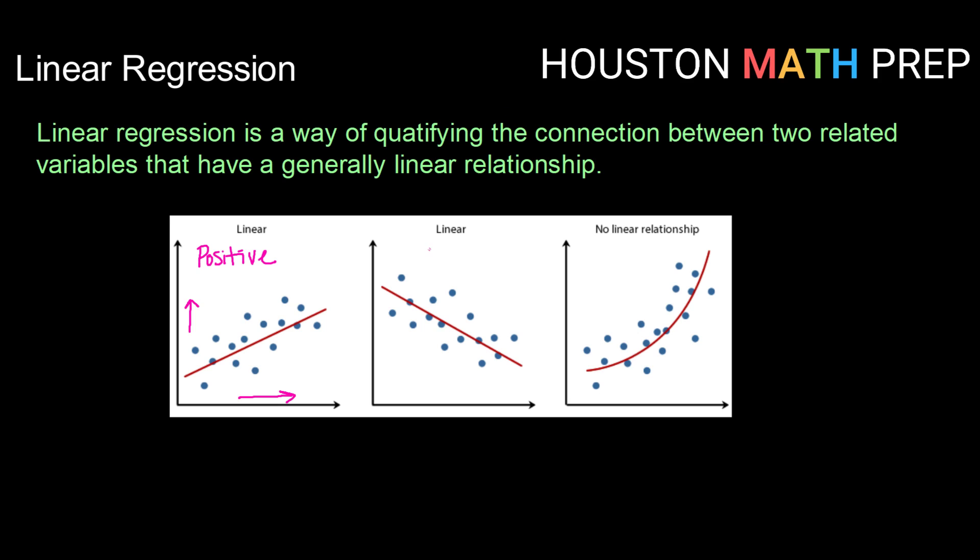Our other type of linear relationship we can have is the opposite. We can have a negative linear relationship. So as one variable goes up, the other variable goes down.